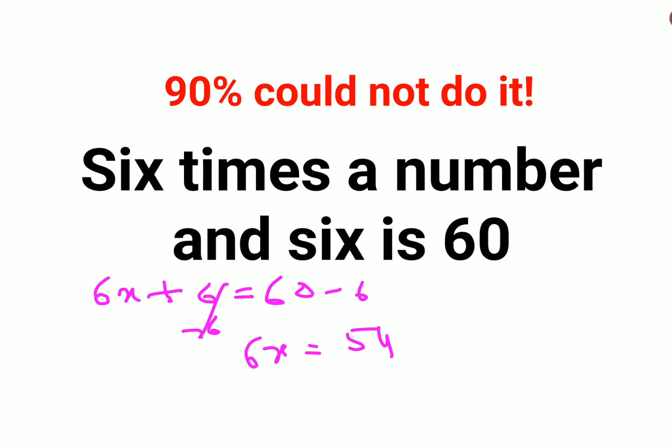Now what you should do is divide both sides by 6 in order to find the value of x. So this and this gets cancelled and I am left with 1s and 9s. So the value of x is 9.